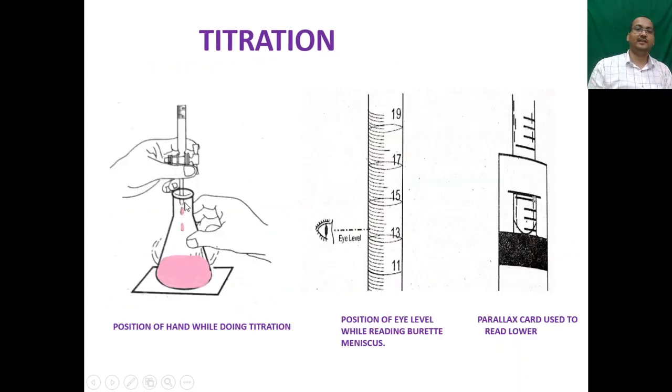Here are the technical things. You need to hold the controller of the burette by left hand and the conical flask using right hand. Sometimes you need to shake the conical flask for mixing of the two solutions. Suppose the solution level is around 13.6 mL, you need to put the eye level at the same level. You need to use parallax card sometimes to read the lower meniscus. What is parallax card? This is a blackened cardboard.